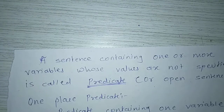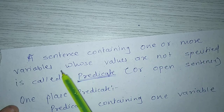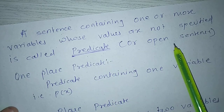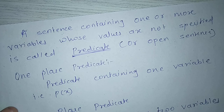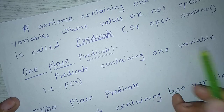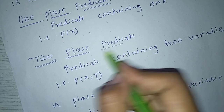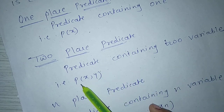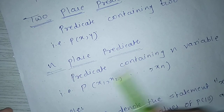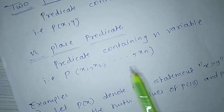Hello students. Next point is predicate. A sentence containing one or more variables whose values are not specified is called a predicate or open sentence. A 1-place predicate means a predicate containing one variable, i.e., p(x). A 2-place predicate means a predicate containing two variables, i.e., p(x, y). An n-place predicate means a predicate containing n variables, i.e., p(x1, x2, ..., xn).